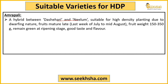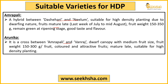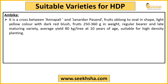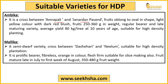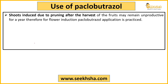The fruit of Amra Pali matures late — between July and mid-August — and the fruit size is 300 to 500 grams. Even at ripening stage, the fruit remains green. Arunika is a cross of Amra Pali and Vanraj — it also has a dwarf canopy and medium fruit size, making it suitable as an HDP variety. Ambika is a hybrid of Amra Pali and Janardhan Pasand, with an oval-shaped fruit. Malika is a semi-dwarf variety — a cross of The Sherry and Nilam — which can also be used under HDP.